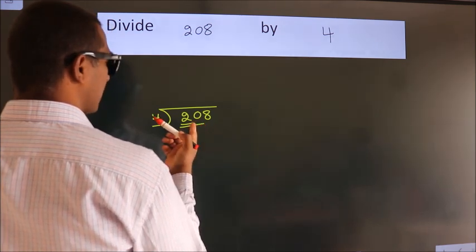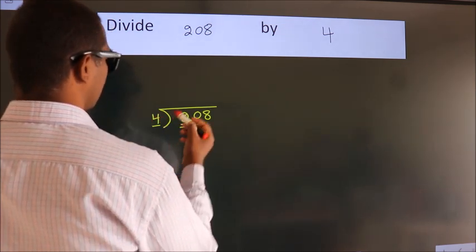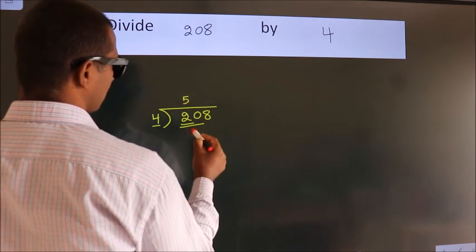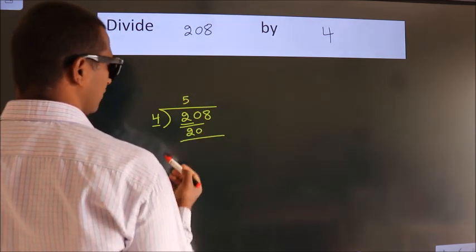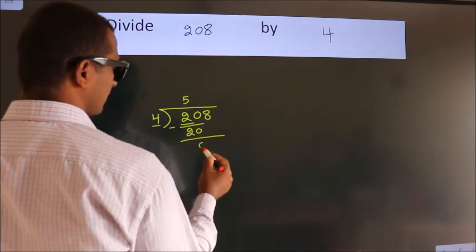When do we get 20? In the 4 table. 4 fives are 20. Now we should subtract. We get 0.